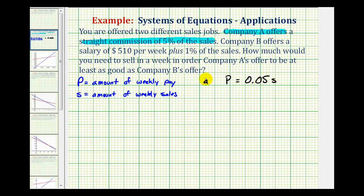And then company B offers a salary of $510 plus 1% of the sales. So the weekly pay is going to be equal to $510 plus 1% times the amount of sales, and 1% as a decimal would be 0.01 times S. Let's call this equation B.